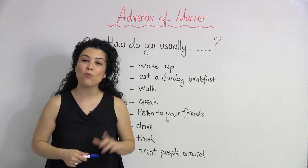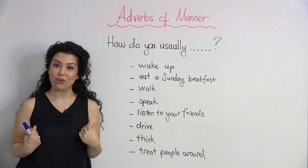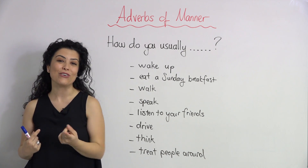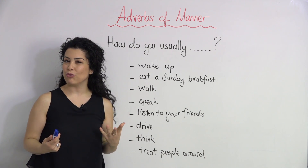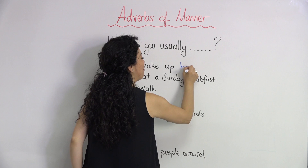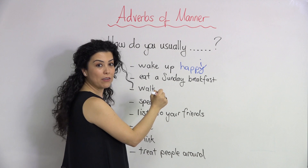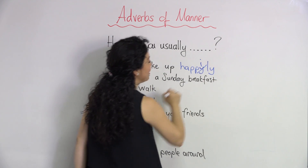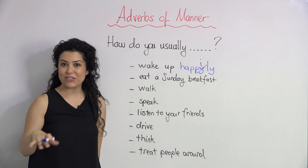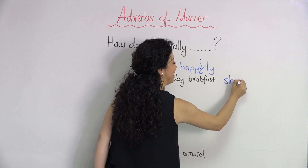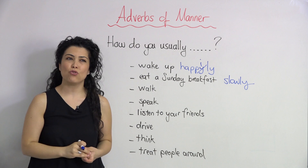Let's practice. Think about how you do these activities in your life. How do you usually wake up? I wake up happily — remember the -y is replaced by an -i. How do you eat a Sunday breakfast? I usually eat it very slowly, taking my time. What about you? How do you usually walk? I usually walk fast.